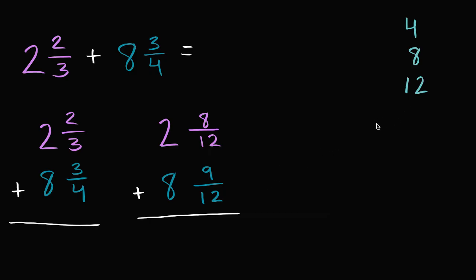Seventeen over twelve is the same thing as one and five twelfths. How did I figure that out? Twelve goes into seventeen one time, and then I still have five left over. Seventeen twelfths is the same thing as one and five twelfths.